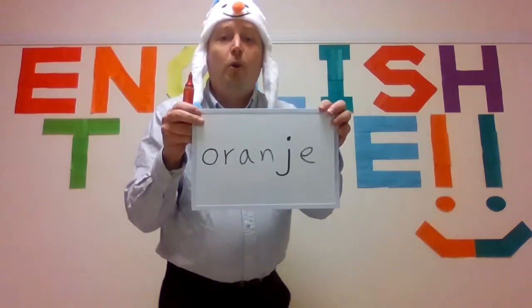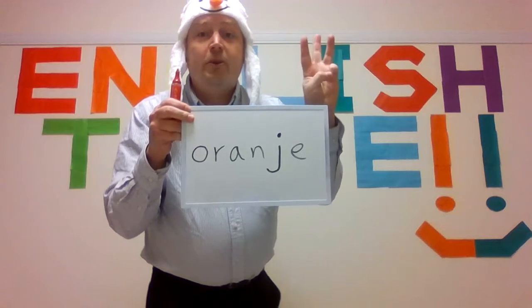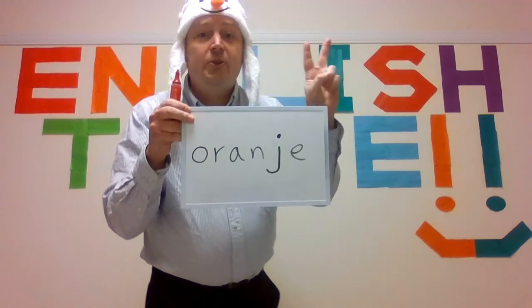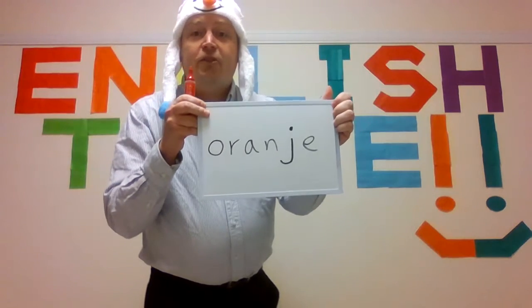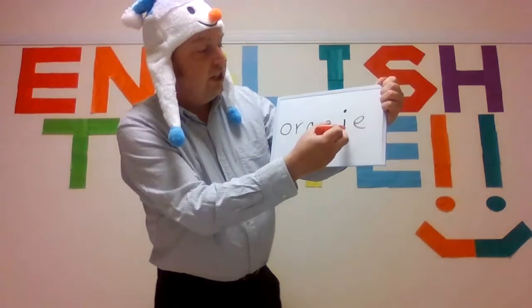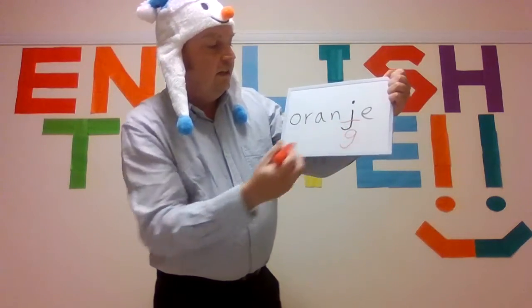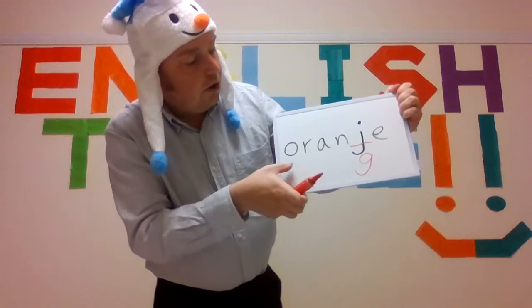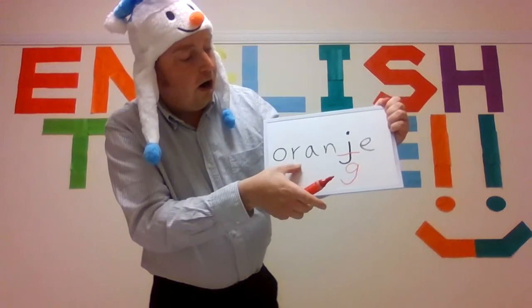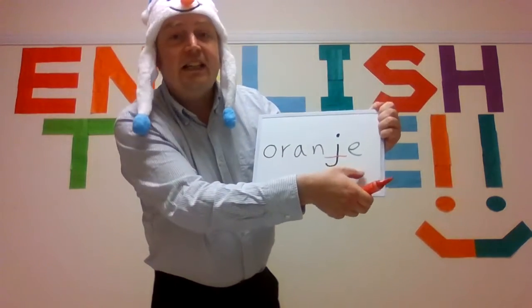The next one — orange. Five seconds: five, four, three, two, one. Did you find the wrong letter? The wrong letter is J — it should be a G. Let's spell together: O, R, A, N, G, E — orange. Very good.